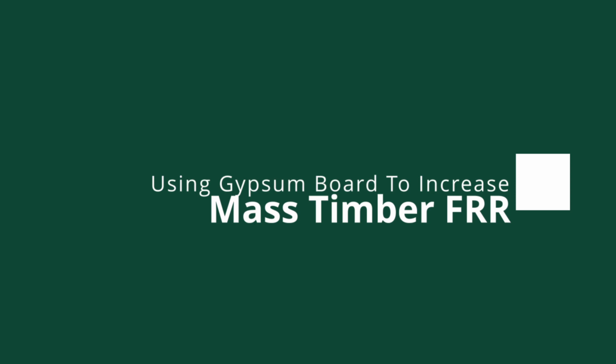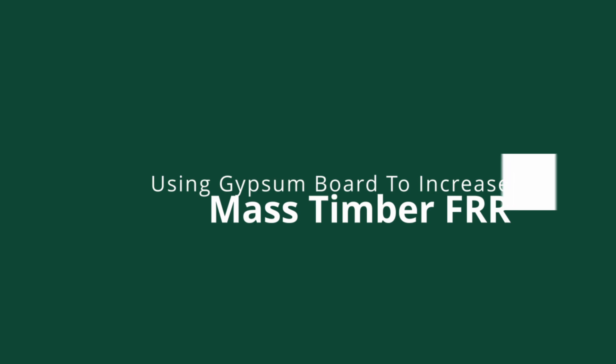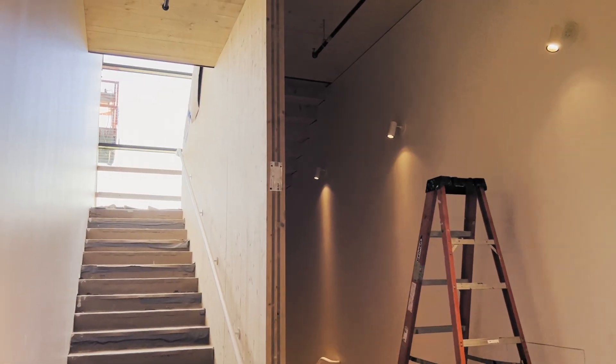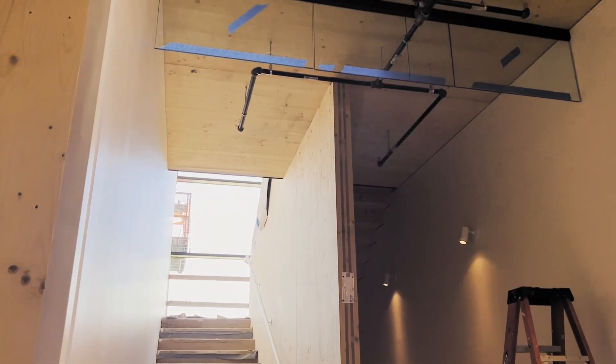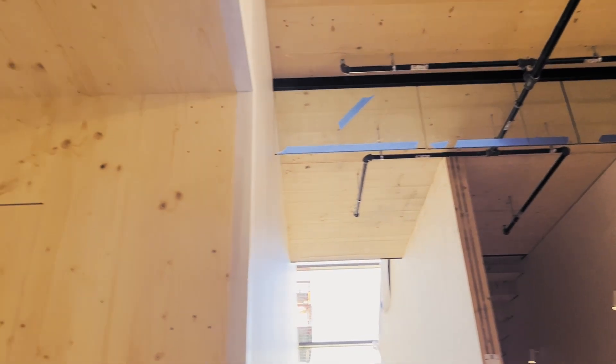When designing mass timber buildings, in most cases you want to expose the mass timber within the building to the maximum extent possible. However, there are certain applications, whether due to design restrictions, project-specific circumstances, or other requirements, which would either require or desire the direct application of gypsum wallboard to the mass timber members. If we are doing this, it might make a lot of sense, and in some cases be necessary, to use that direct applied gypsum wallboard to enhance the fire resistance rating of the timber members.